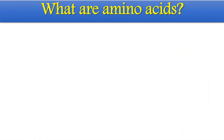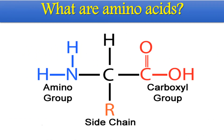We have already seen what amino acids are — they are organic compounds having an amino group and an acid group together in the same component. In protein synthesis, we use amino acids as the monomeric unit for proteins. We have different types: alpha, beta, and gamma amino acids, but only alpha amino acids are used for protein synthesis.